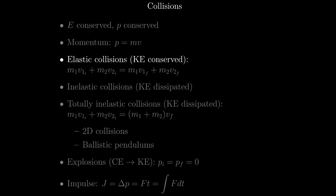In elastic collisions, objects don't stick together, so kinetic energy is conserved. An example of an elastic collision is a Newton's cradle. For elastic collisions, conservation of momentum means that the total momentum of the objects before the collision equals their total momentum after the collision.